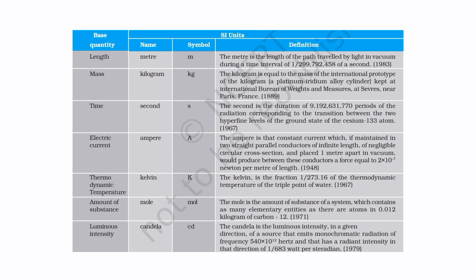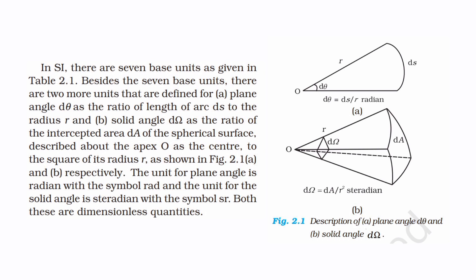The SI system has 7 fundamental units with symbols: length — meter (m), mass — kilogram (kg), time — second (s), electric current — ampere (A), thermodynamic temperature — kelvin (K), amount of substance — mole (mol), and luminous intensity — candela (cd). Additionally, there are 2 supplementary units: plane angle (radian) and solid angle (steradian).